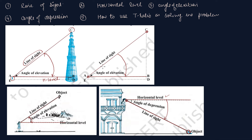अब आप सवाल करेंगे कि sir, आपने बोला कि line of sight और horizontal level के बीच के angle को angle of elevation बोला, और अब आप कह रहे हैं कि horizontal level और line of sight के बीच का angle, angle of depression है। If you look up above the horizontal level, you see the angle of elevation, and if you look down below the horizontal level, you see the angle of depression।